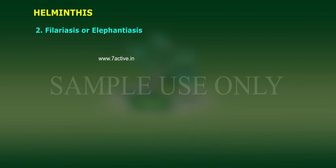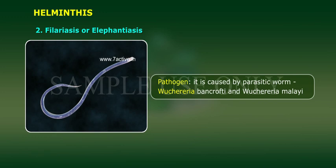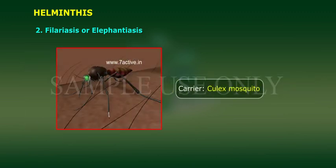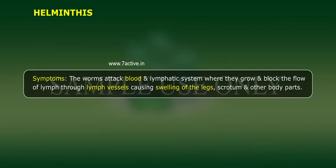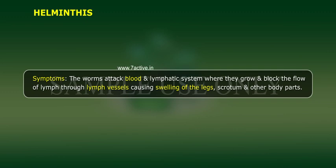2. Filariasis, or elephantiasis. Pathogen: it is caused by the parasitic worms Wuchereria bancrofti and Wuchereria malayi. Carrier: Culex mosquito. Symptoms: the worms attack the blood and lymphatic system, where they grow and block the flow of lymph to lymph vessels, causing swelling of the legs, scrotum, and other body parts.